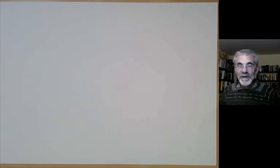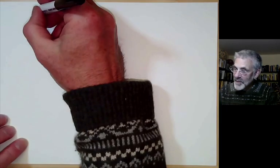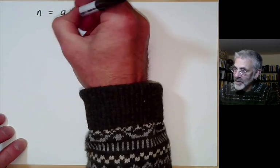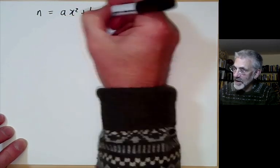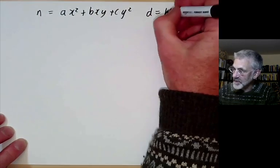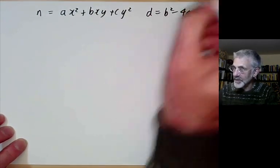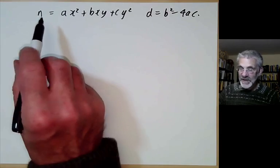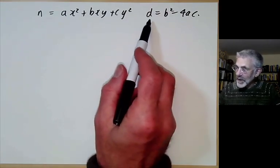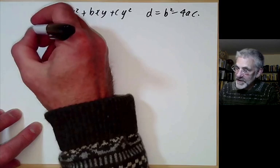This lecture is part of Berkeley Math 115, an introductory undergraduate course on number theory, and will be about representing a number n by a binary quadratic form ax² + bxy + cy² of discriminant d = b² - 4ac. This will be a continuation of last lecture, where we looked at some small discriminants.